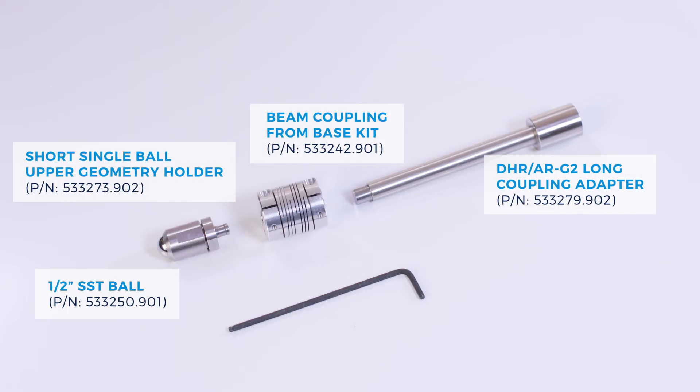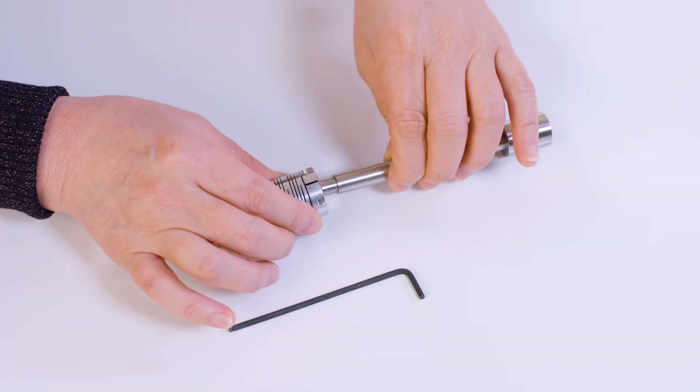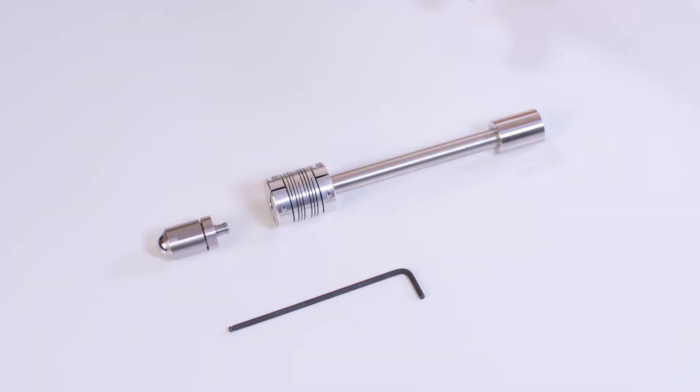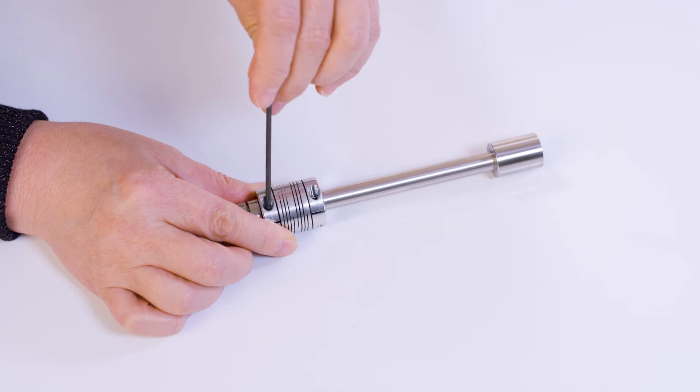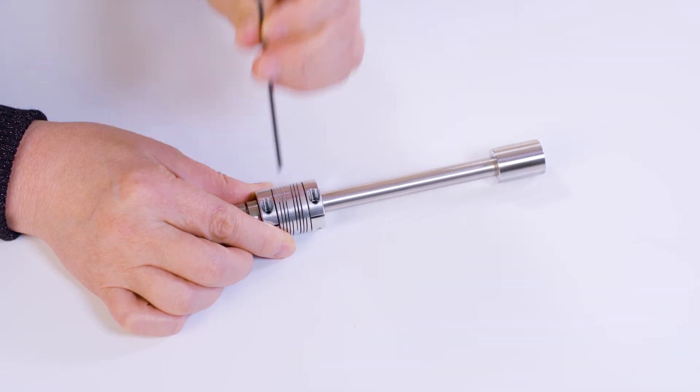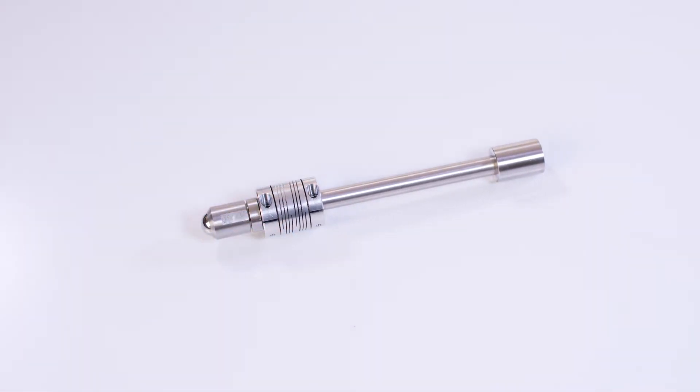For the top fixture, you will need to use this long coupling adapter. Insert the beam coupling, and then attach this short, single-ball upper geometry holder with a half-inch ball in it. Tighten the screws on the side.